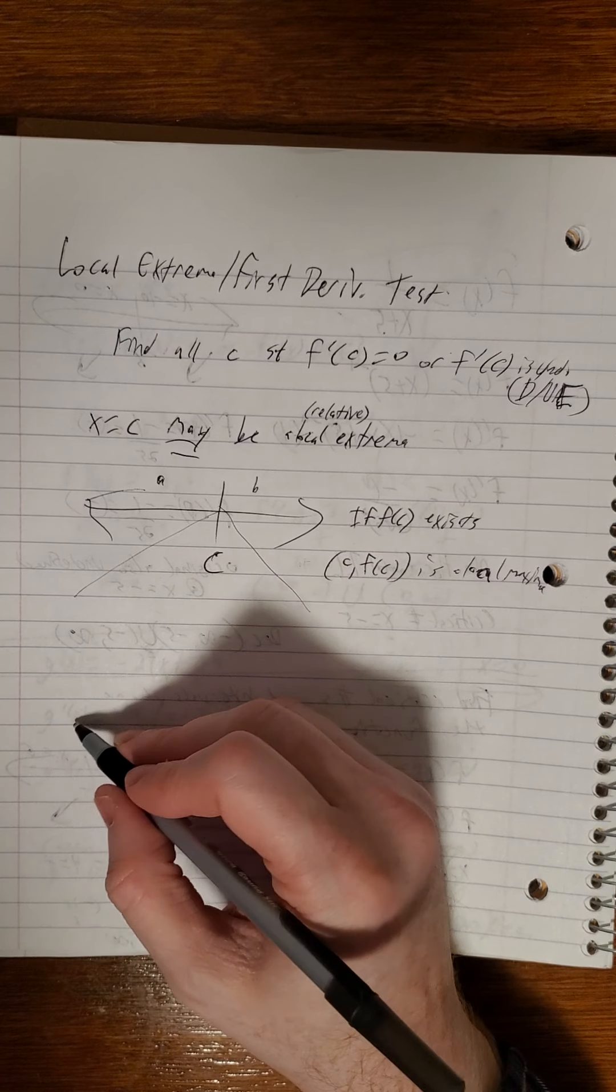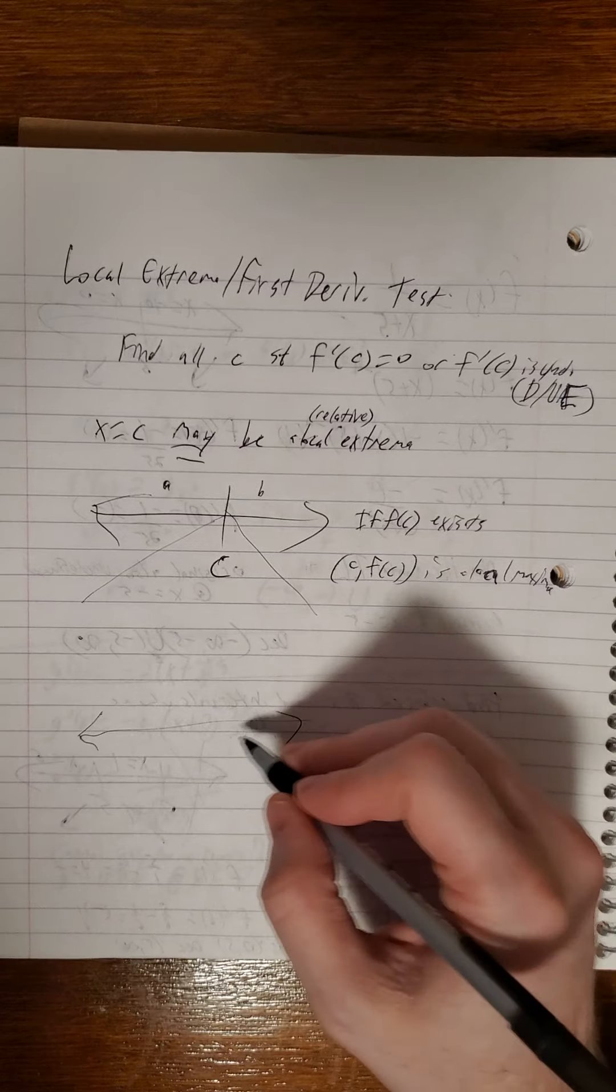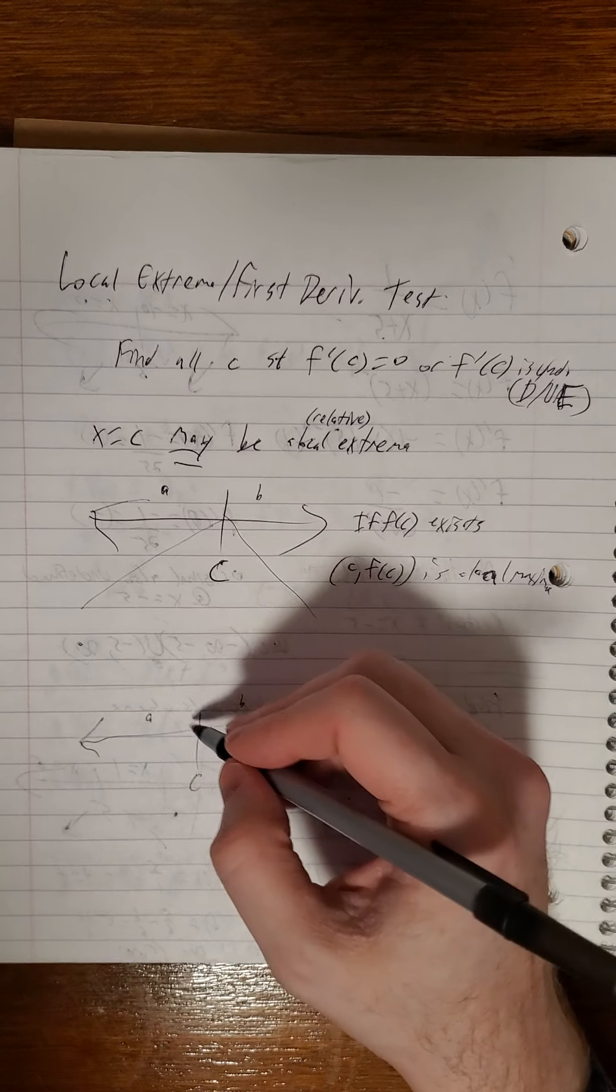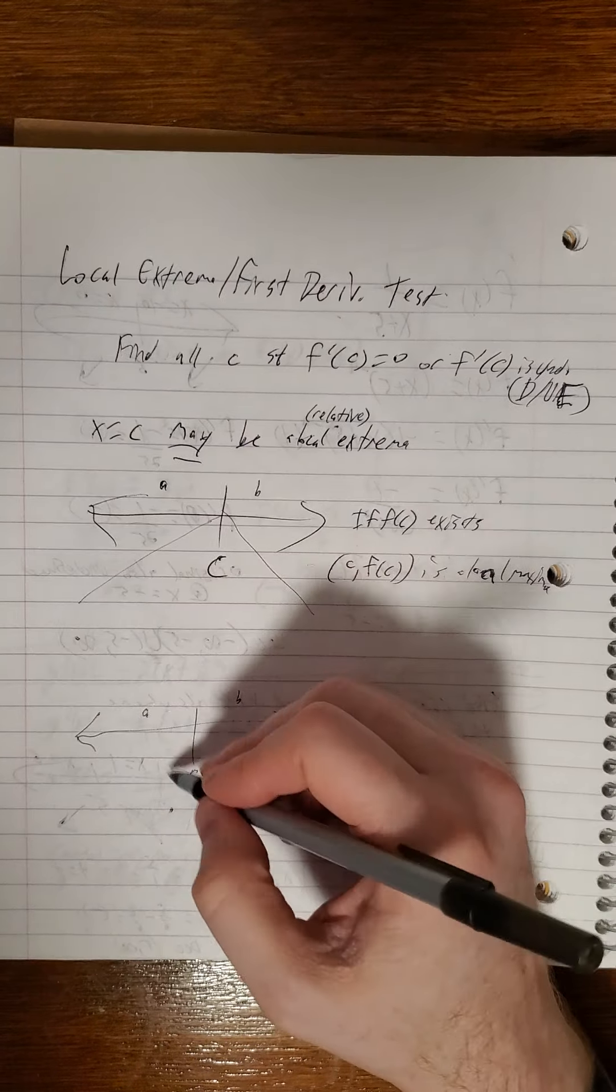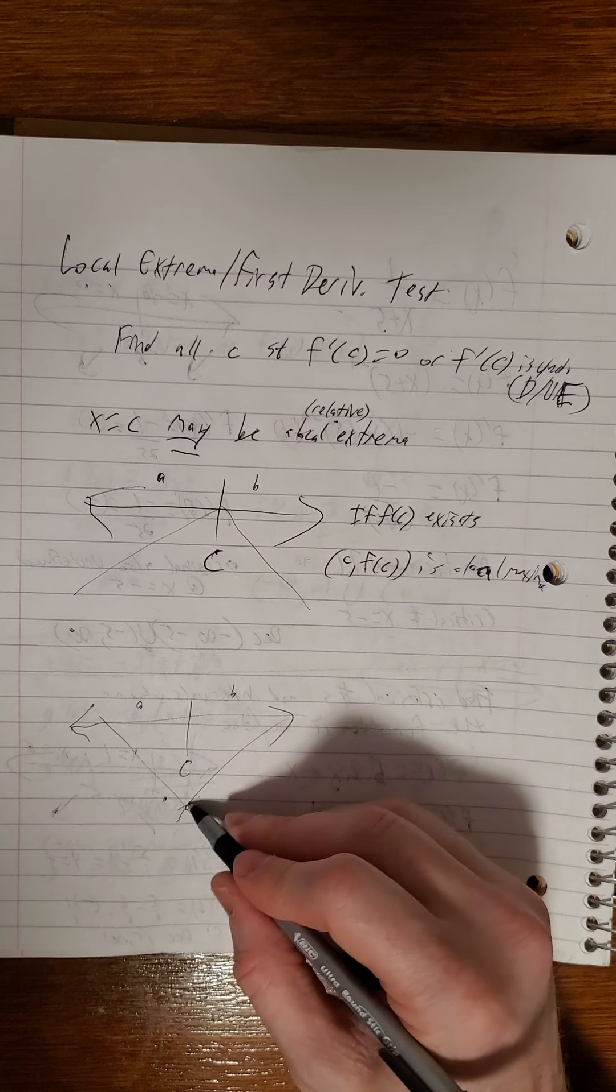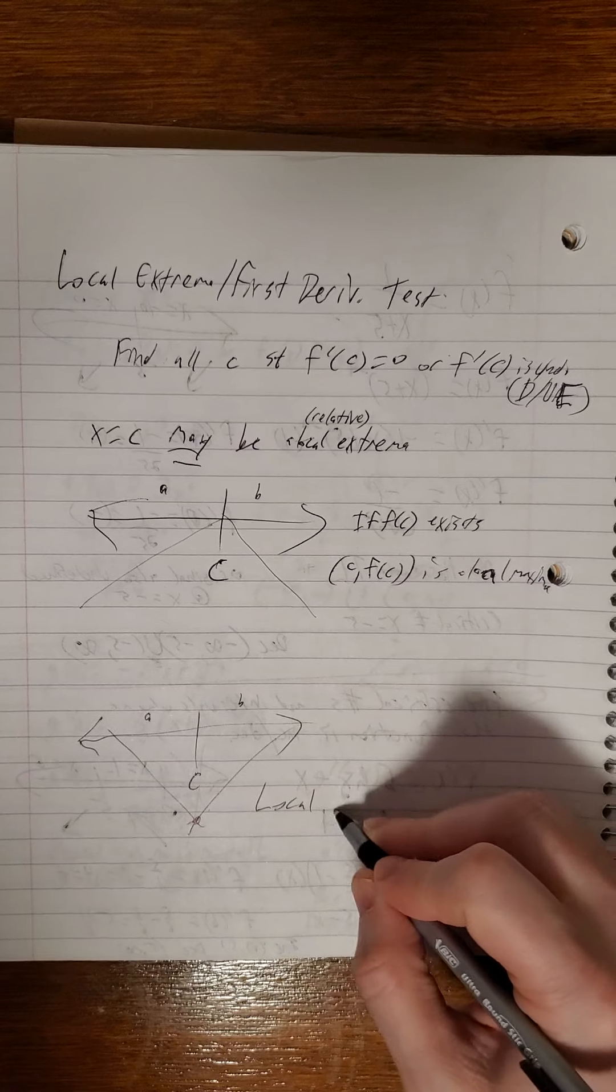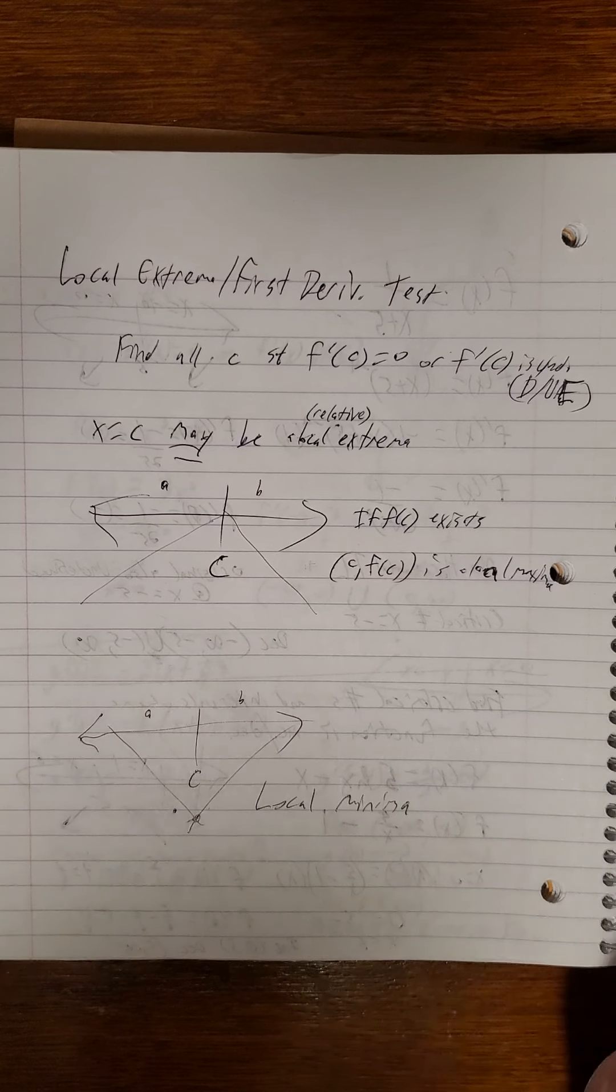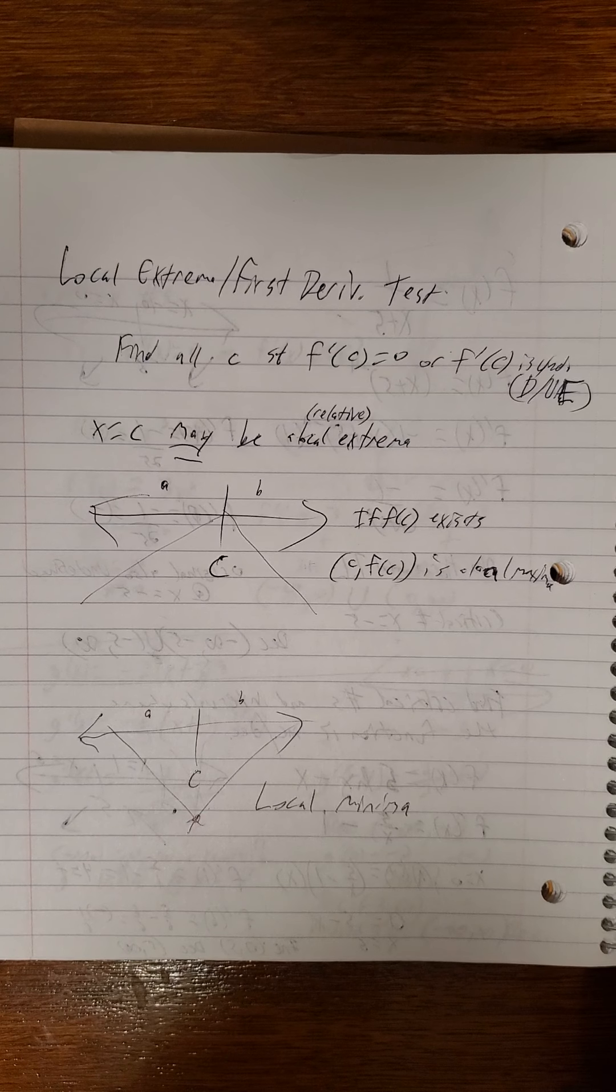You can create for yourself another version looking at here's a and b again. Only if we're decreasing and then switch around to increasing, this will then be a local min. Minima for singular minimum or plural.